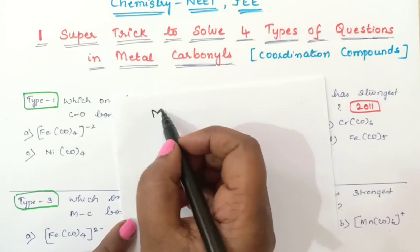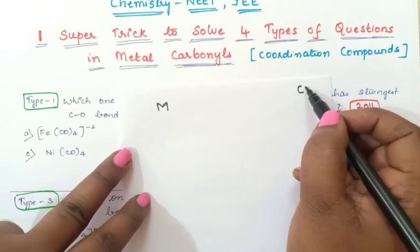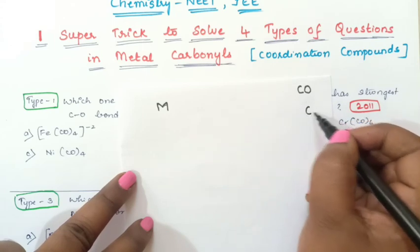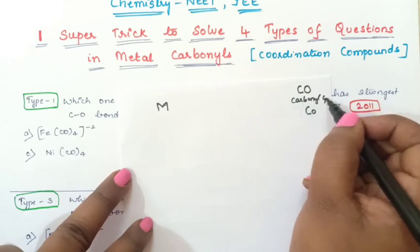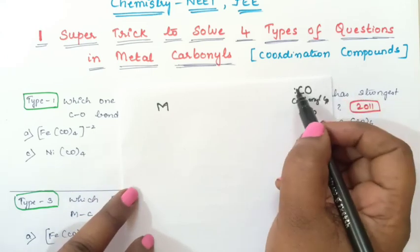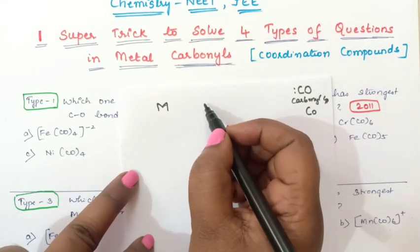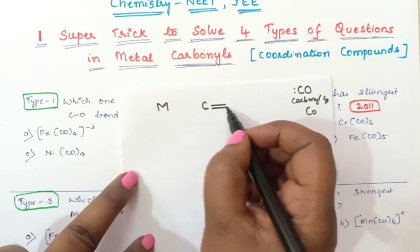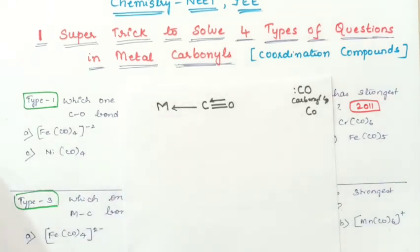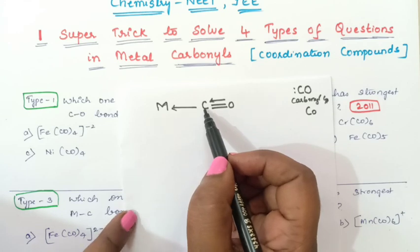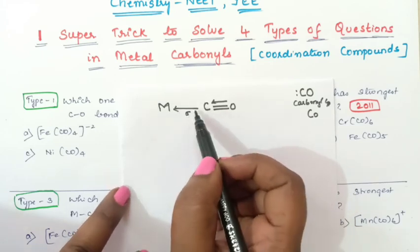Metal is represented as M. The formula for carbonyl is CO — that is the carbonyl group. This carbonyl group will have two electrons, and these two electrons will be donated to the metal, acting as a strong ligand. So carbon will donate these two electrons to the metal, and this is called the sigma bond or coordinate bond.